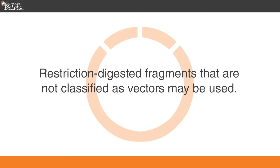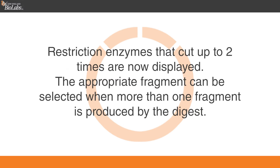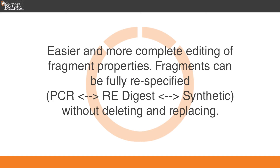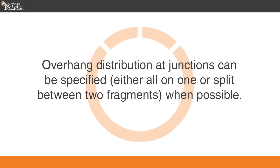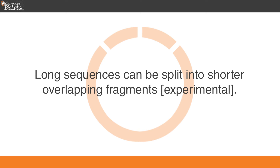Restriction digested fragments that are not classified as vectors may be used. Restriction enzymes that cut up to two times are now displayed, and the appropriate fragment can be selected when more than one fragment is produced by the digest. Easier and more complete editing of fragment properties is available, and fragments can be fully re-specified without deleting and replacing. Overhang distribution at junctions can be specified, either all on one or split between two fragments when possible. Long sequences can be split into shorter overlapping fragments.